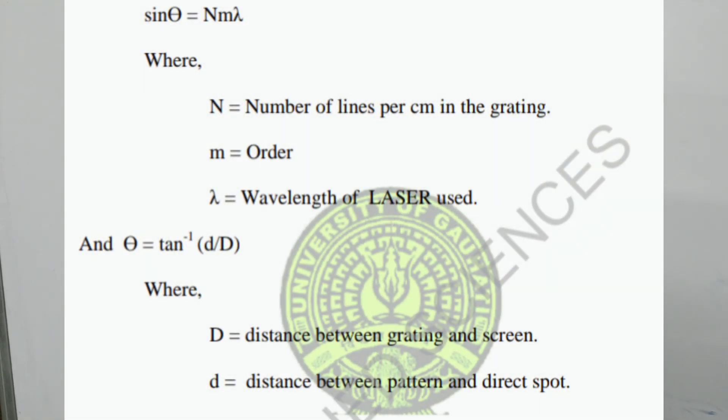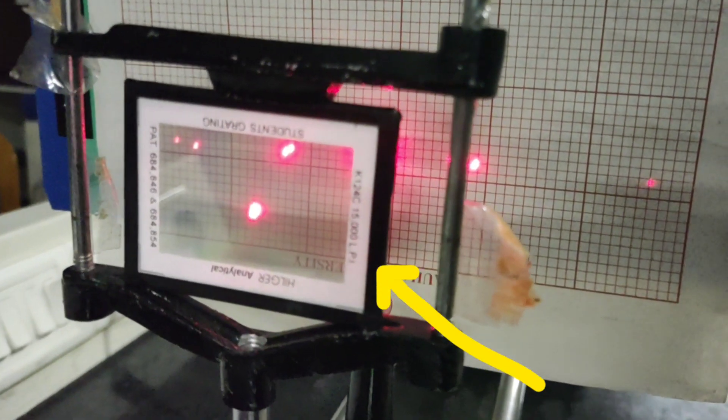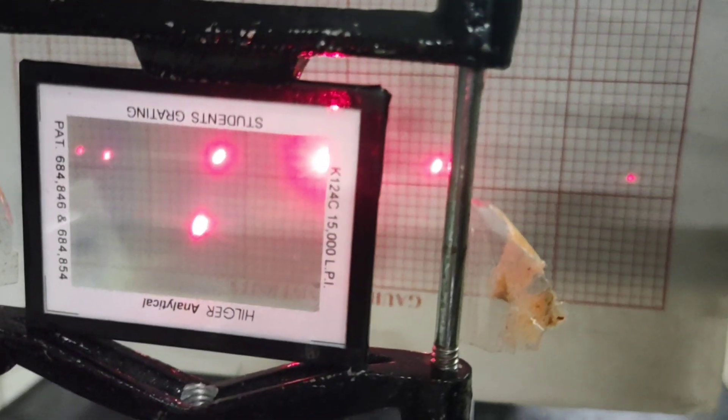N is the number of lines per grating, which is provided on our grating plate as 15,000 lines per inch.